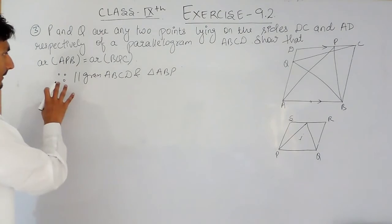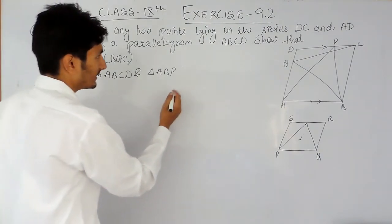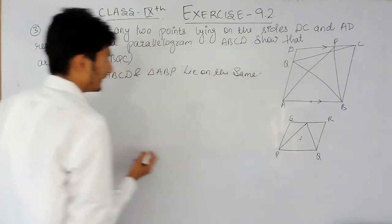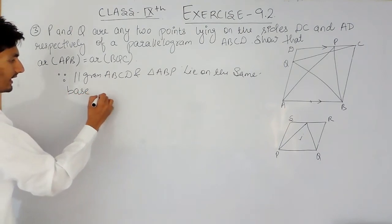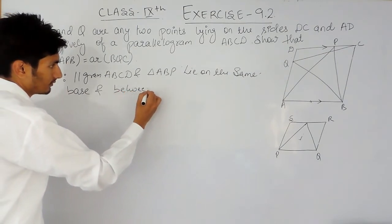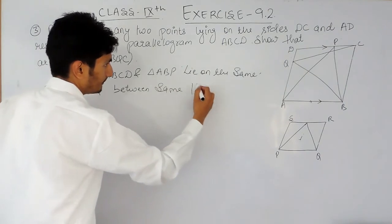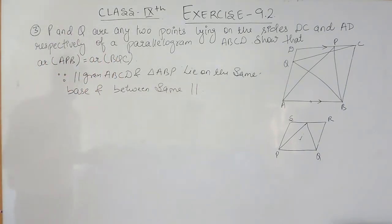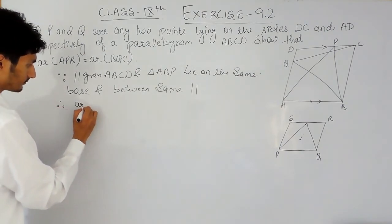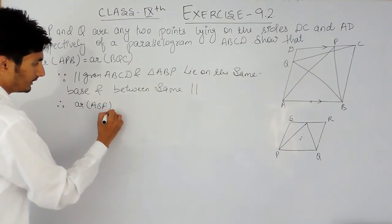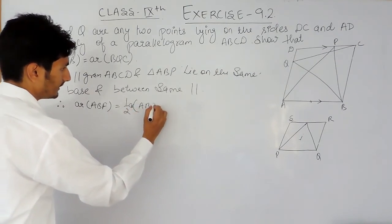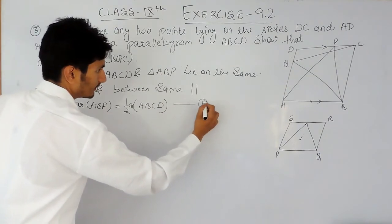Since parallelogram ABCD and triangle ABP lie on the same base AB and are between the same parallels, the area of triangle ABP must be equal to half of the area of parallelogram ABCD. This is our first equation.